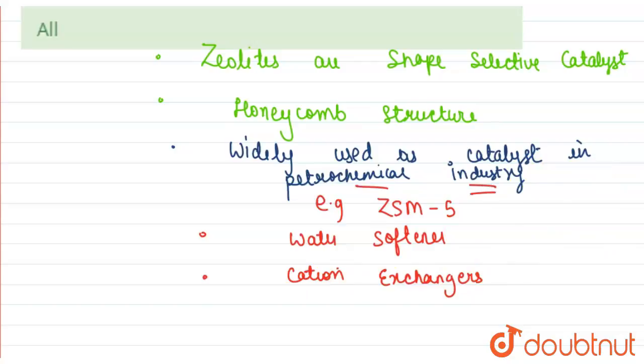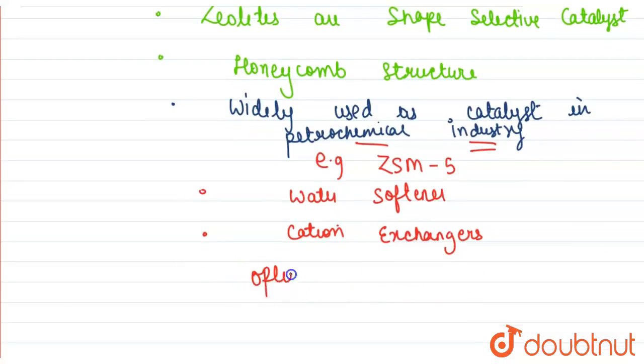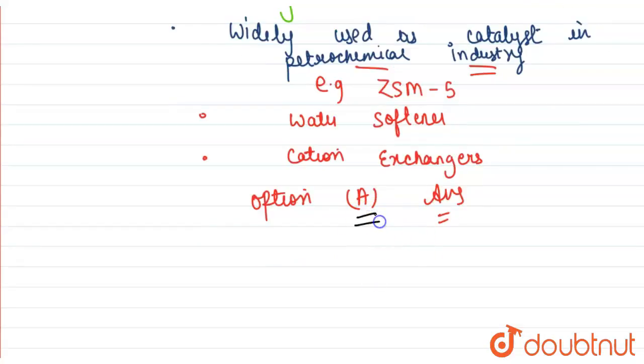So our answer for the given question is option number A: zeolites are used in petrochemical industry during cracking.